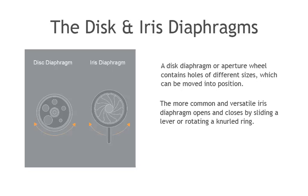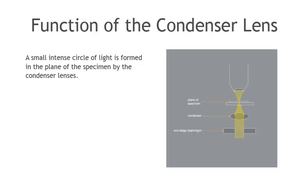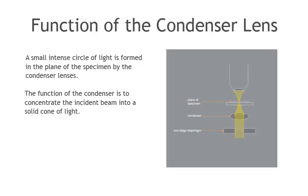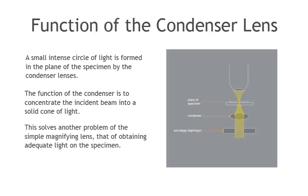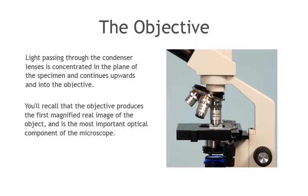The more common and versatile iris diaphragm opens and closes by sliding a lever or rotating a knurled ring. A small, intense circle of light is formed in the plane of the specimen by the condenser lenses. The function of the condenser is to concentrate the incident beam into a solid cone of light, which solves another problem of the simple magnifying lens — that of obtaining adequate light on the specimen. Light passing through the condenser lenses is concentrated in the plane of the specimen and continues upward and into the objective. The objective produces the first magnified real image of the object, and is the most important optical component of the microscope.